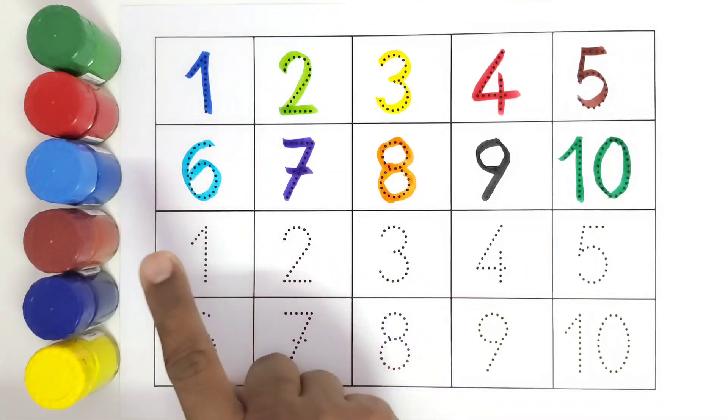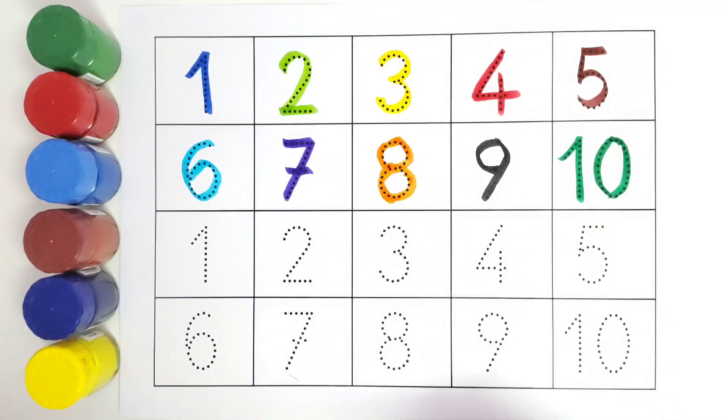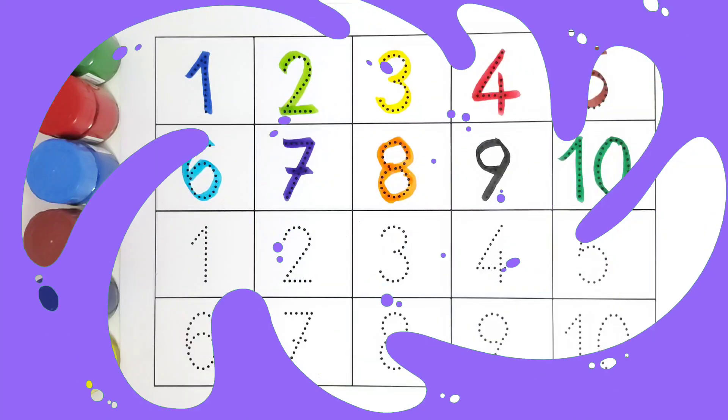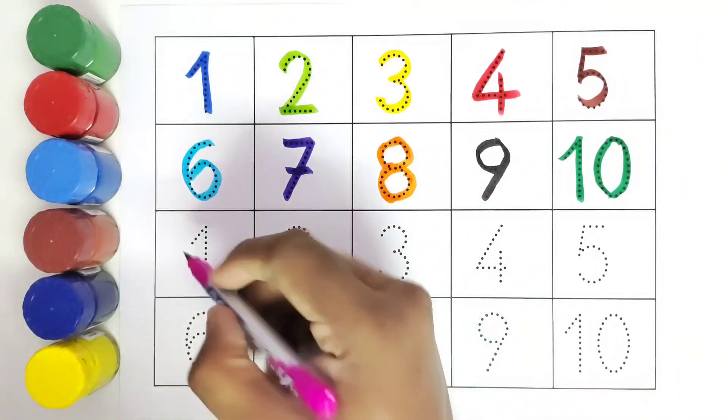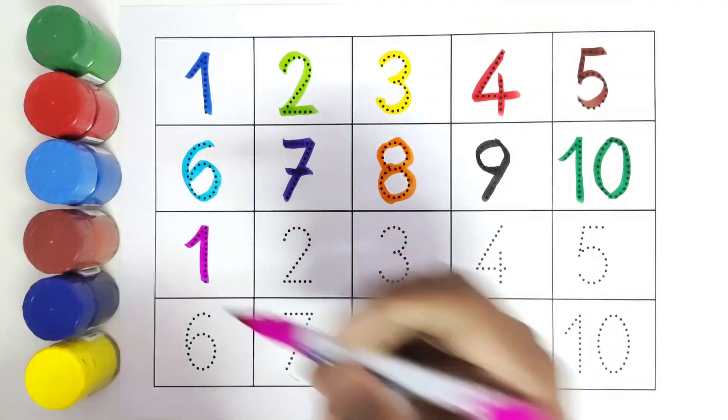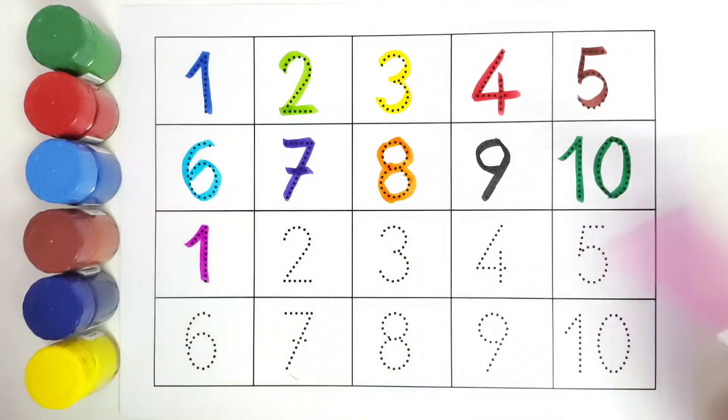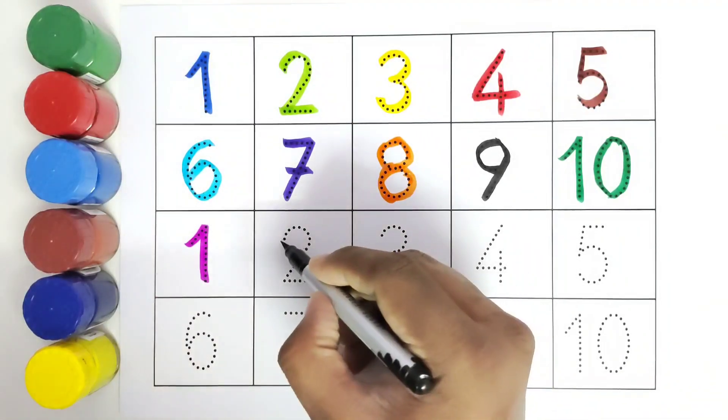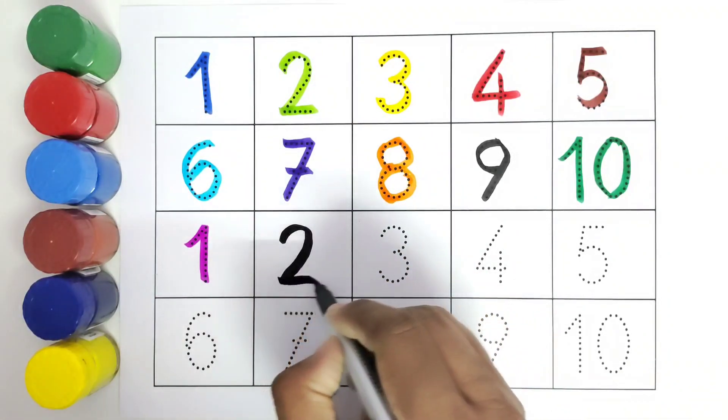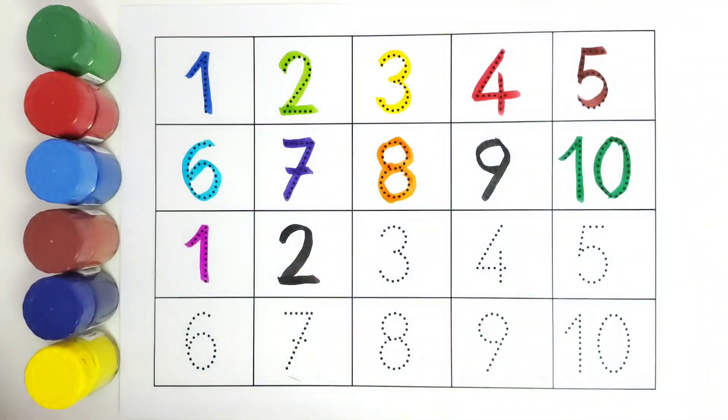We will again color from 1 to 10 with different colors. Let's get started. This is 1. One. Number 1. This is 2. Number 2. This is 3.